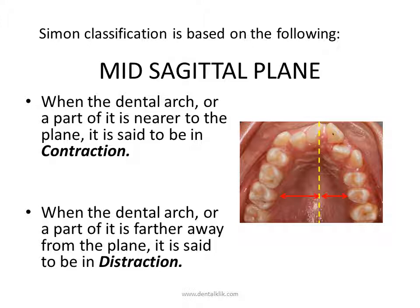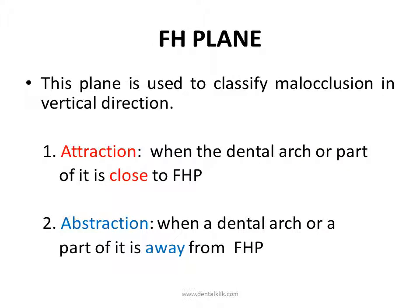In normal arch relationship, according to Simon, the orbital plane passes through the distal aspect of the canine. This is also called the law of the canine.